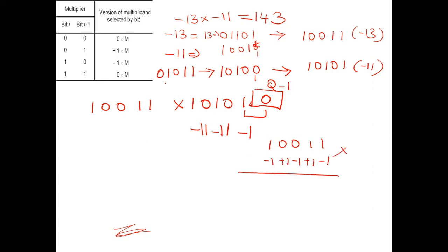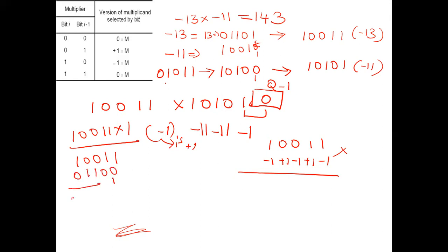Multiplying by minus 1 gives 0 1 1 0 1, and the full partial product row is 0 1 1 1 1 0 1. MSB is 0, so we sign-extend with five 0s. For plus 1: result is 1 1 0 0 1, MSB is 1 so we extend with four 1s. For minus 1: result is 1 0 1 1 0, MSB is 0 so we extend with three 0s.